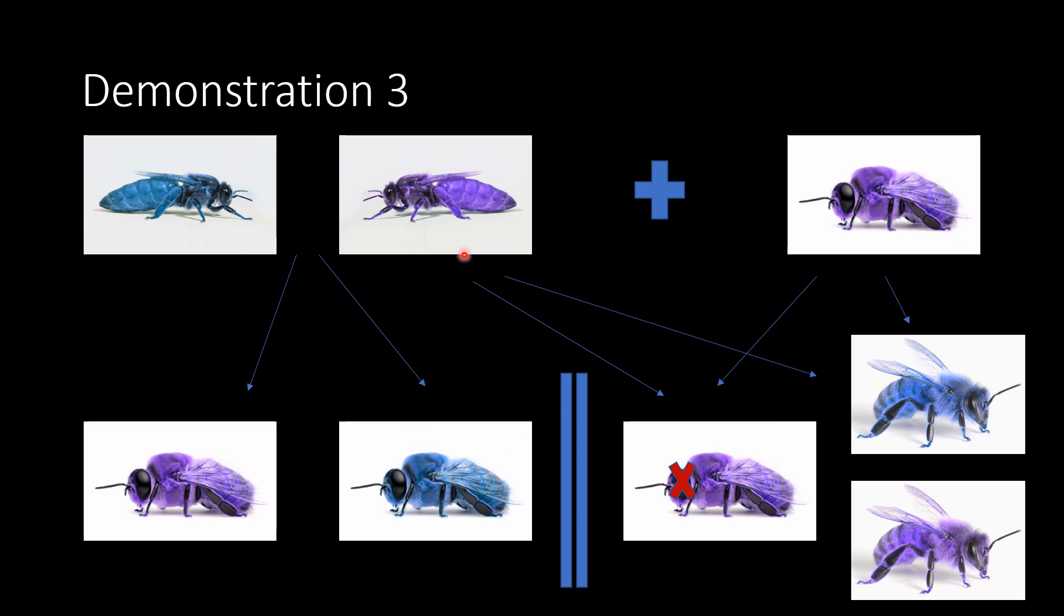But if she does choose to fertilize the egg, one of two things can happen. She can choose to fertilize and donate her purple chromosome to his purple chromosome resulting in an unviable diploid drone. Or if she chooses to fertilize, she could also donate her blue chromosome to his purple chromosome resulting in a viable diploid worker bee.